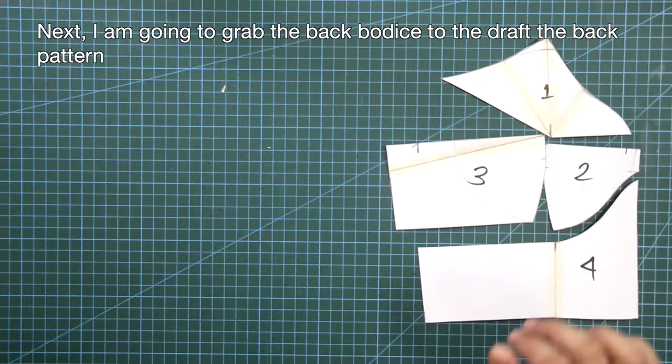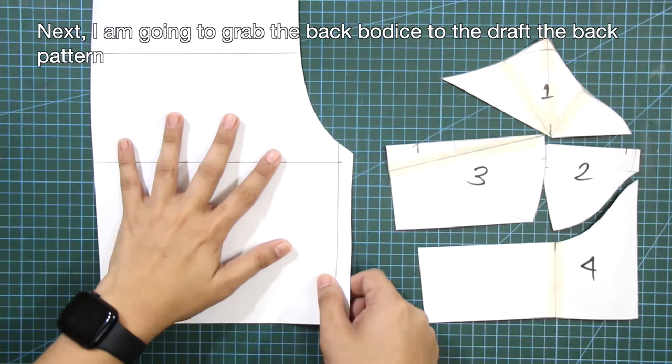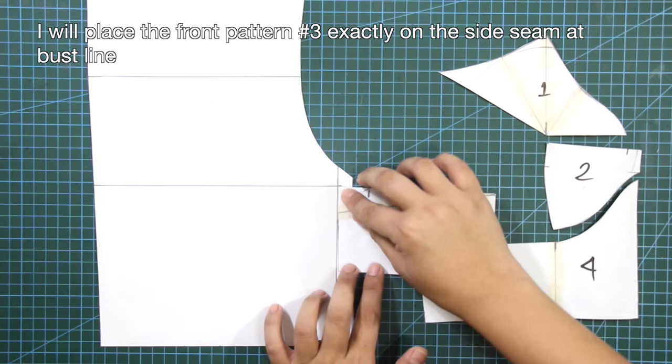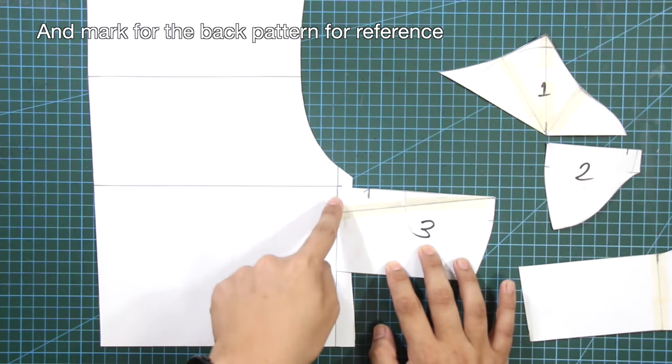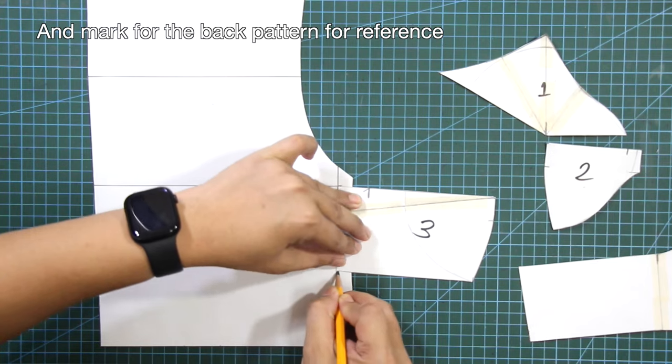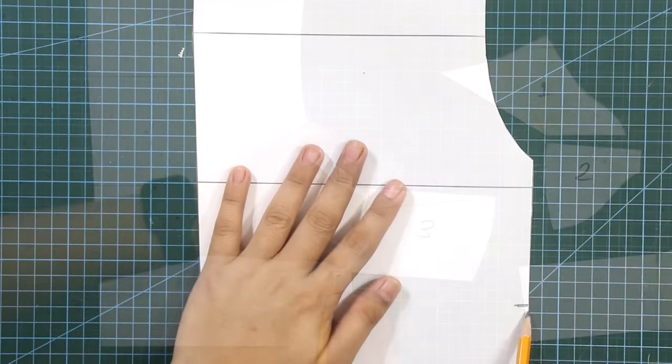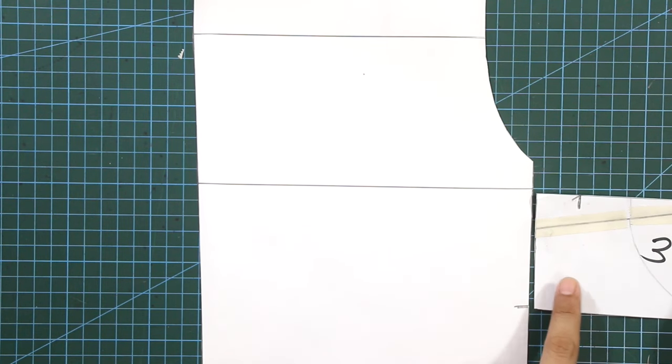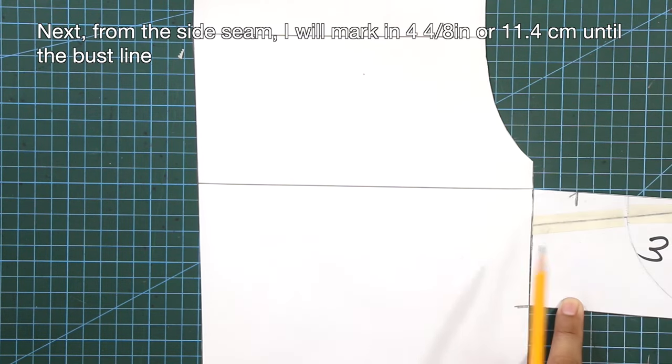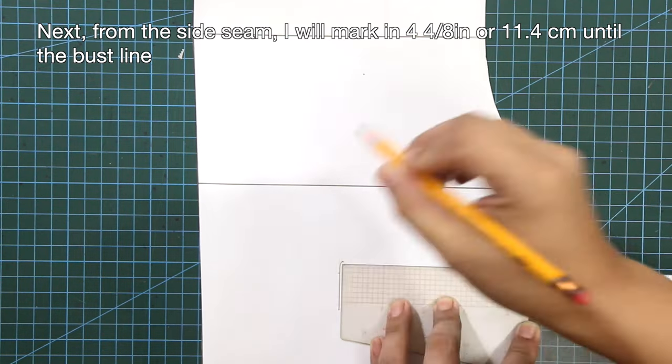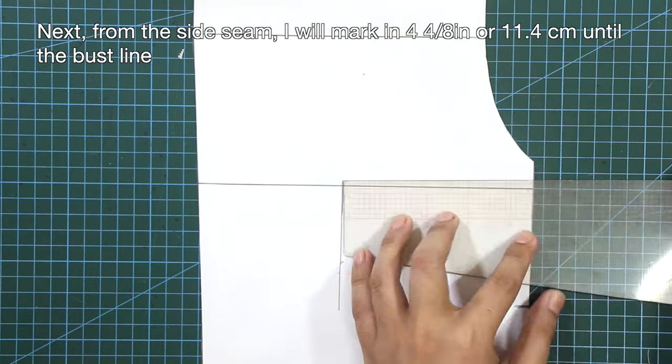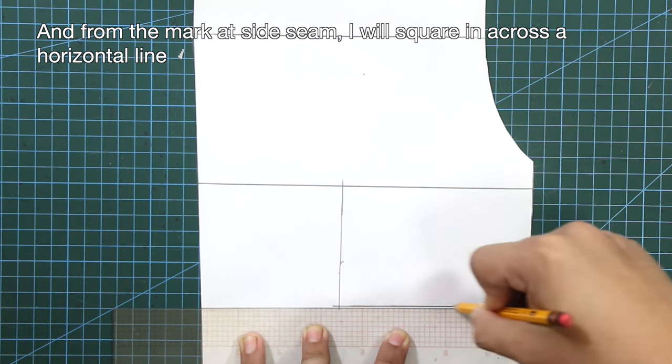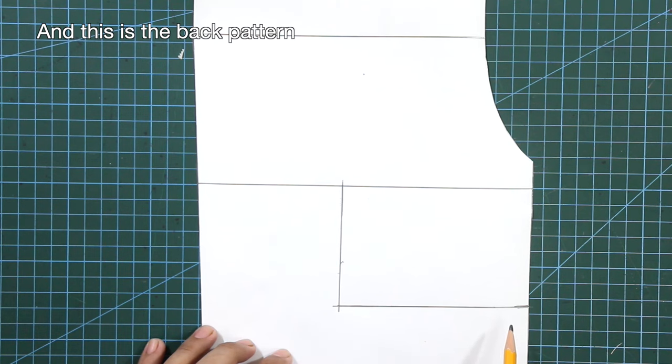Next I'm going to grab the back bodice to draft the back pattern. I will place the front pattern number three exactly on the side seam at bust line and mark for the back pattern reference. From the side seam I will mark in 4/8 inches until the bust line. From the mark at side seam I will square in across a horizontal line. This is the back pattern.